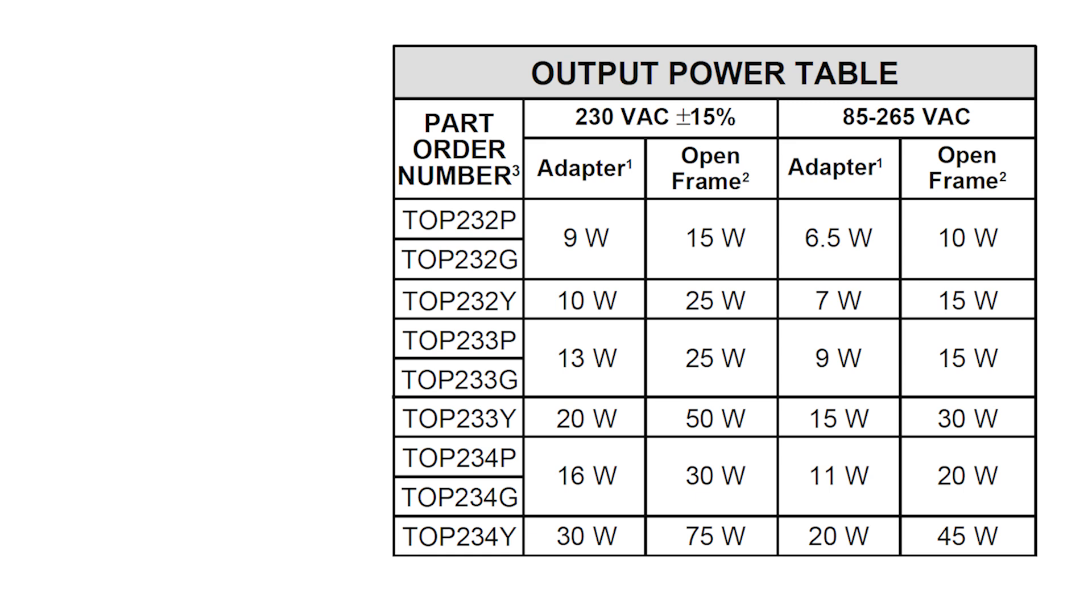There is a table in the datasheet that shows the microcircuits belonging to this series: TOP232, 233, and 234. They have different powers, but they are all assembled according to the same scheme. At standard mains voltage in a sealed case, the 233Y can be used for power supplies up to 20 watts. If the power supply is without a case with good cooling, then the power increases to 50 watts.